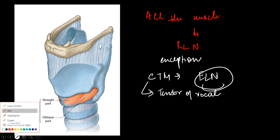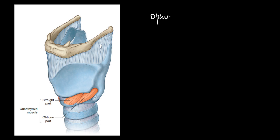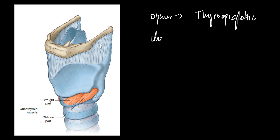Let us revise all the actions of the muscles of the larynx. The opener of the laryngeal inlet is the thyroepiglottic muscle, which is part of the thyroarytenoid muscle. The closure of the laryngeal inlet is by the aryepiglottic muscle.